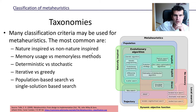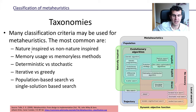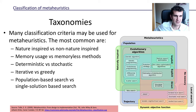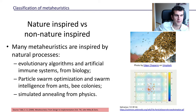We're going to see five different criteria that we may use to classify meta-heuristics: whether the meta-heuristic is inspired by nature or not, whether it uses memory or not, whether it's deterministic or stochastic, whether it's iterative or greedy, and finally — probably the most important or most used criterion — whether it's population-based or single-solution based.